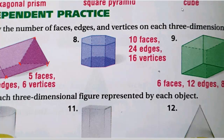In question eight, we have two parallel and congruent bases, so it is a prism. The name of the prism depends on how many sides the base has. Counting the sides: one, two, three, four, five, six, seven, eight — eight sides. A polygon with eight sides is an octagon, so this is an octagonal prism.